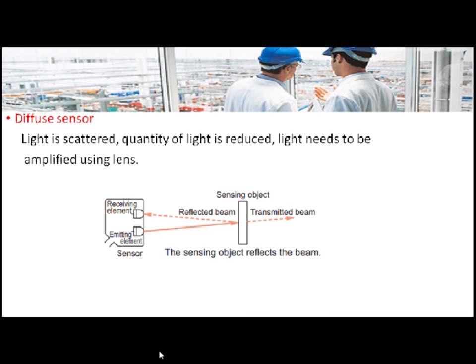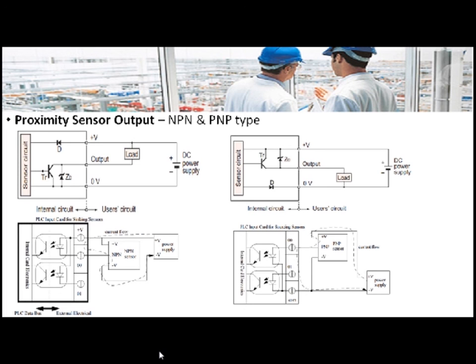The common outputs of proximity sensors are NPN and PNP type, and the figure shows how they are connected to PLCs. Thank you for listening.